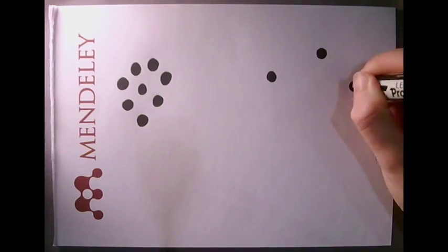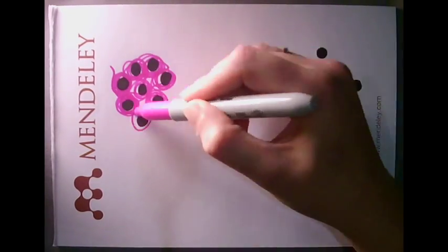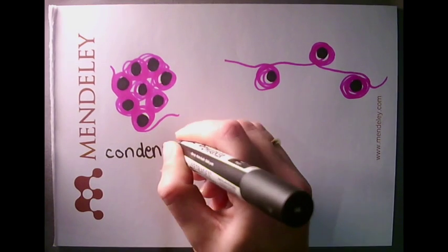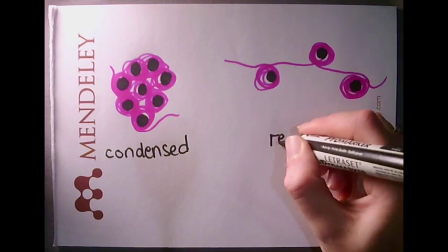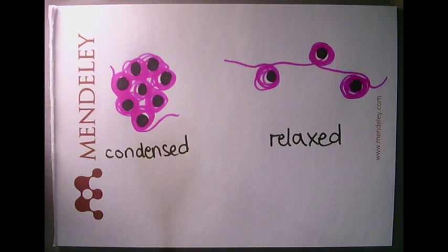DNA can be wrapped around histones very tightly, in a condensed state, or very loosely, in a relaxed state.